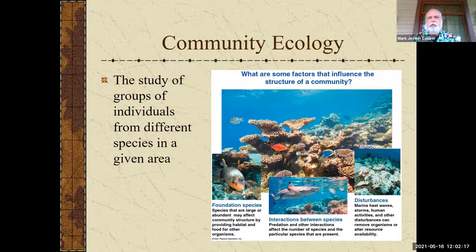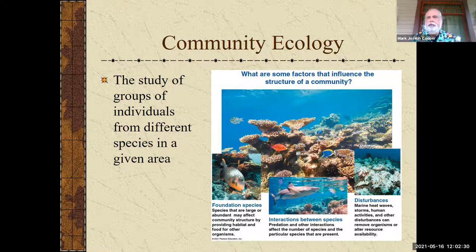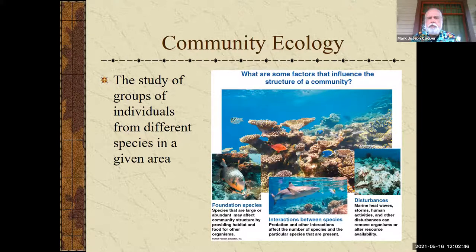This week we'll start with community ecology. By definition, a community is the study of groups of individuals from different species in a given area. That is different than the population ecology definition, which was the study of groups of individuals of a single species. Here we have coral reefs showing a bunch of different species of animals and algae. We're going to go through some of the things that community ecologists look at, and we'll start with interspecific interactions.